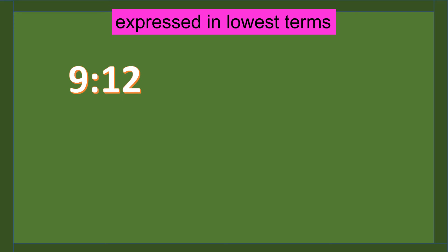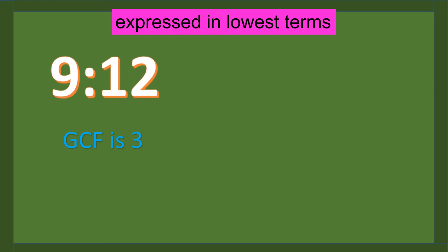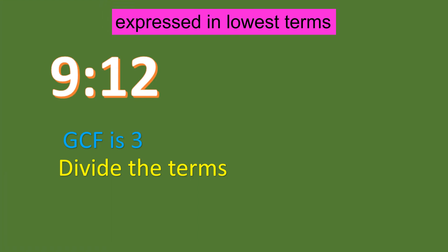Another example: 9 is to 12. Identify the GCF. The GCF is 3. Divide the terms: 9 divided by 3 equals 3, and 12 divided by 3 equals 4. So, the lowest term is 3 is to 4.